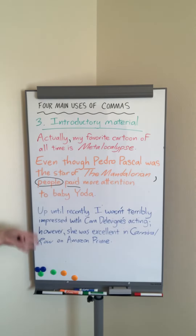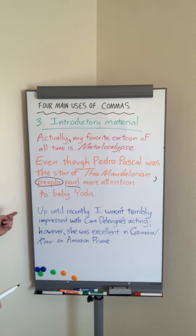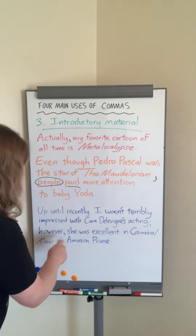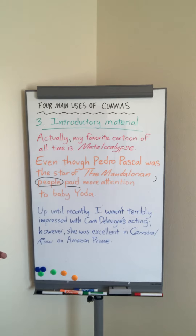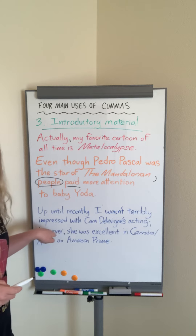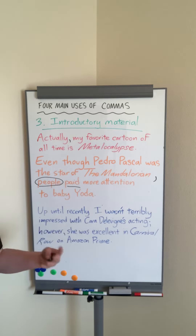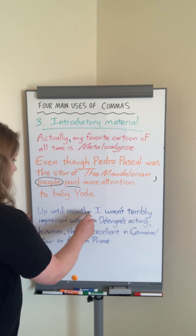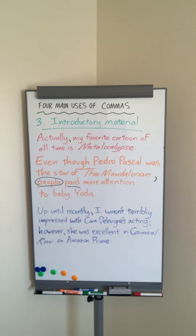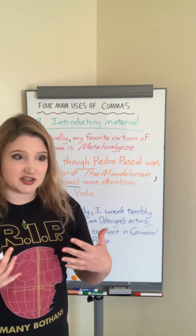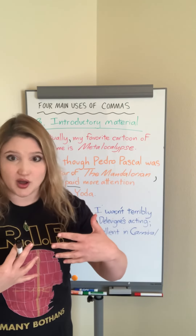This one is a compound-complex sentence: 'Up until recently, I wasn't terribly impressed with Carey Mulligan's acting; however, she was excellent in Carnival Row on Amazon Prime.' You can use a conjunctive adverb like 'however' after a semicolon — that needs a comma — and 'up until recently' also needs a comma. You can think of it as any place where you would take a slight breath or pause when speaking.